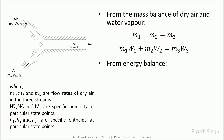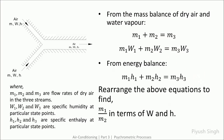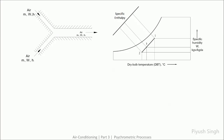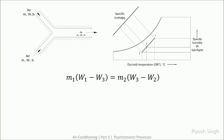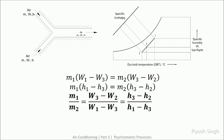From energy balance, since the process is adiabatic, the total heat content in the system remains constant. Rearranging these equations, we find the ratio between M1 and M2 in terms of specific humidity and specific enthalpy. This figure shows the mixing process on the psychrometric chart, where 1 and 2 are the inlets and 3 is the outlet condition. Point 3 lies on a line connecting the inlet points.